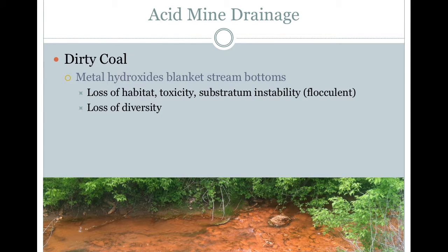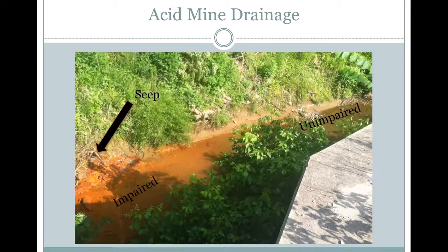Inevitably, the water within the mine will drain through a fissure, sometimes many miles away from the abandoned mine itself. As the acidic mine water mixes with the circumneutral stream water, the pH of the mine water increases to the point where the previously dissolved metals precipitate and blanket the bottom of the stream. This fine layer of flocculant is directly toxic to many organisms, as well as reducing habitat availability. Shown here is an image of Big Bailey Run, just upstream of Chansey.